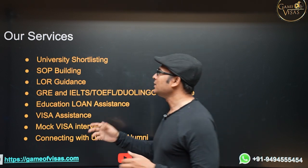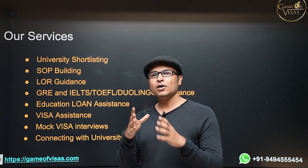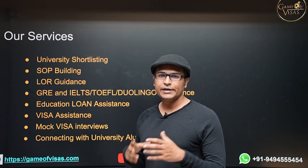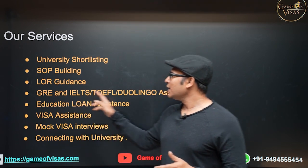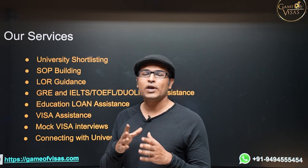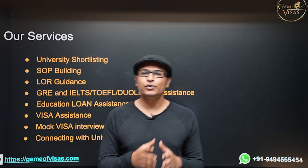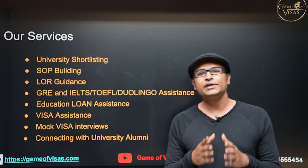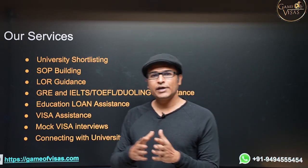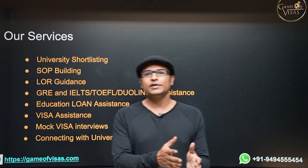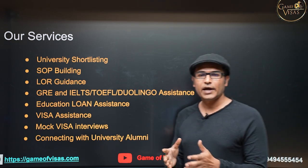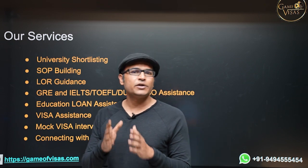These are all the services that we provide: university shortlisting — depending on your profile, we shortlist universities for you to apply; statement of purpose building; LOR guidance; GRE and English test assistance; and education loan assistance. You don't need any collateral — without any security, you can now get an education loan. Getting an education loan is very simple these days. Whatever the fee amount, you have a range of universities — 10 lakh, 20 lakh, or 50 lakh — and you will get a complete education loan. You can pay off your education loan in one year after getting a job.